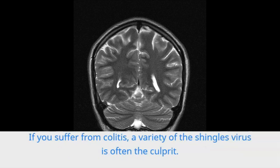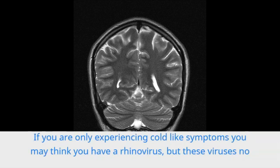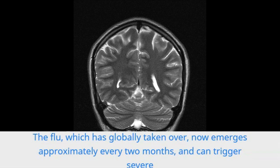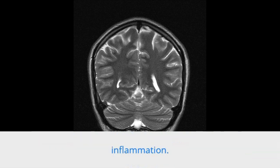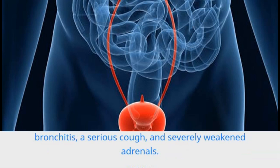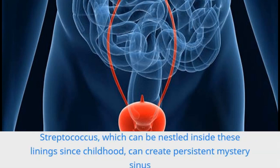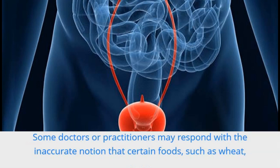Conditions connected to colon inflammation can have a number of different instigators. If you suffer from colitis, a variety of the shingles virus is often the culprit. Inflammation can also occur if you catch a flu — if you are only experiencing cold-like symptoms, you may think you have a rhinovirus, but these viruses no longer exist. The flu, which has globally taken over, now emerges approximately every two months and can trigger severe inflammation in the sinuses, chest, lungs, and gut, and may give rise to issues such as bronchitis, a serious cough, and severely weakened adrenals.